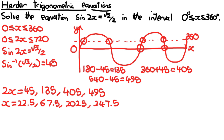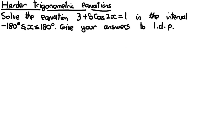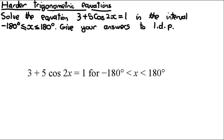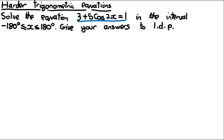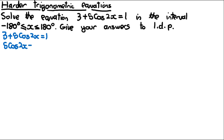If the graph is squeezed by 2, it fits within the interval of 0 to 360. Here's another example specifically mentioned on the spec. Whenever you get an equation like this, rearrange it into the form cos(something) = a number. So for 3 + 5cos(2x) = 1: subtract 3 from both sides to get 5cos(2x) = -2, then divide by 5 to get cos(2x) = -2/5.